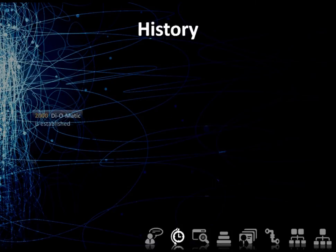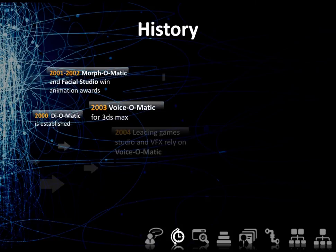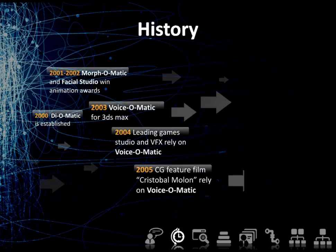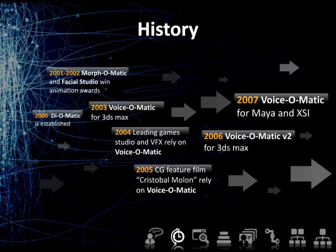Since 2000, Di-O-Matic has developed many award-winning animation solutions such as Morph-O-Matic and Facial Studio. In 2003, Di-O-Matic released Voice-O-Matic for 3ds Max, and it was rapidly adopted by leading video game studios and visual effects houses throughout the globe. Voice-O-Matic entered the world of CG feature film production in 2005, and the following year a new and improved version was released. 2007 marked the release of Voice-O-Matic as a plugin for both Maya and Softimage.